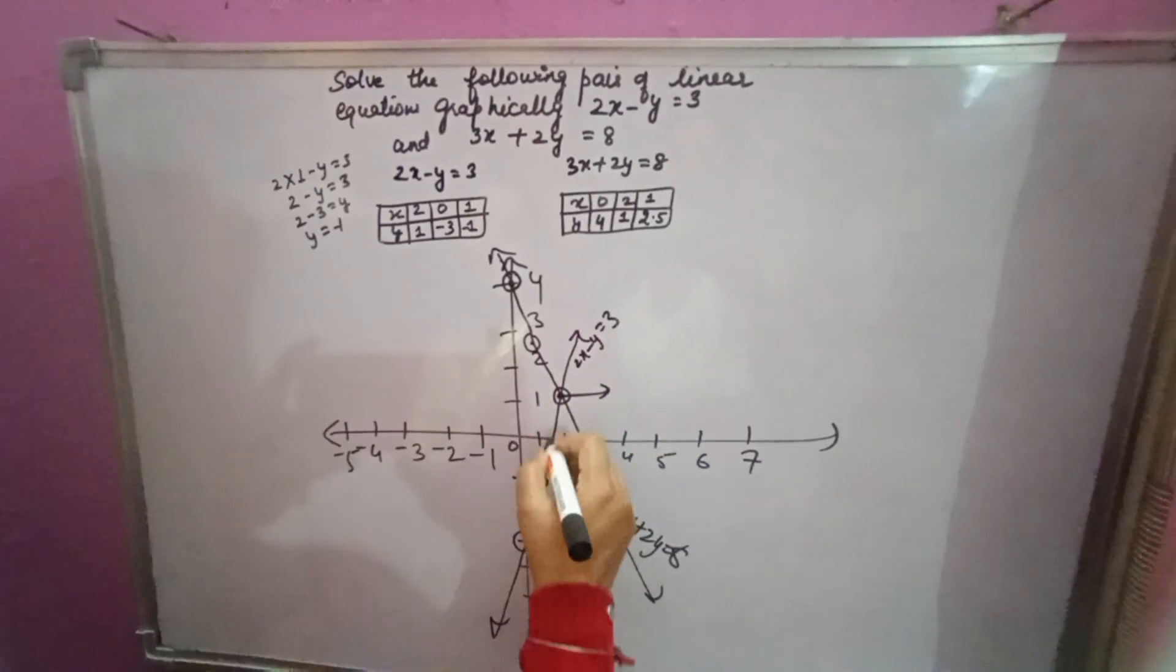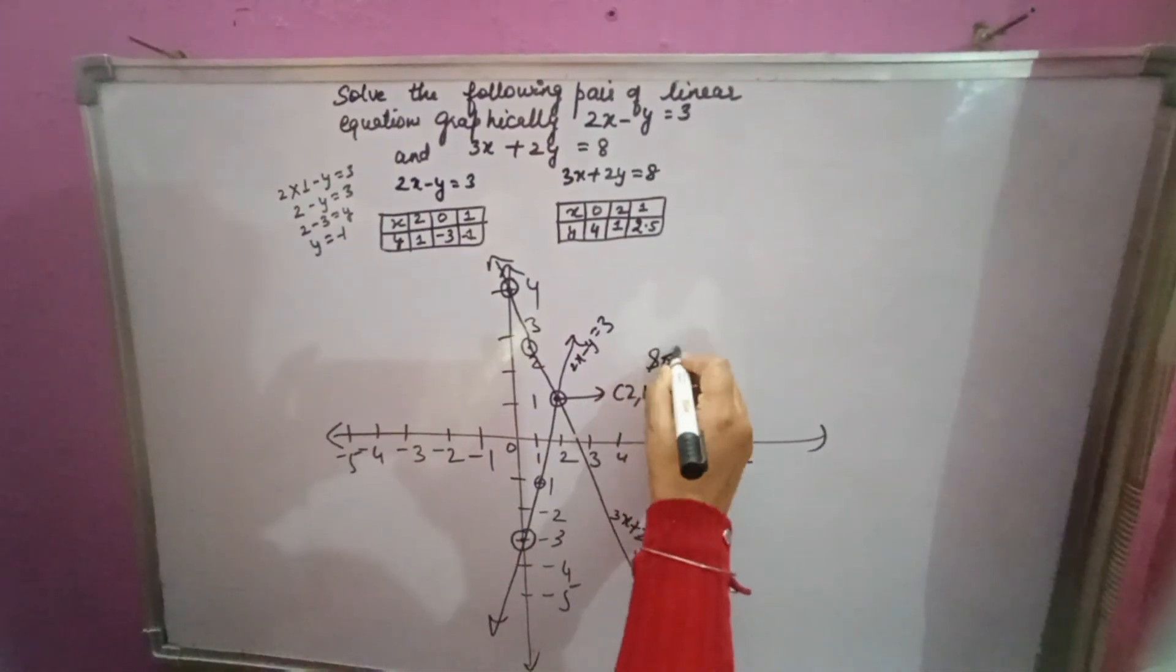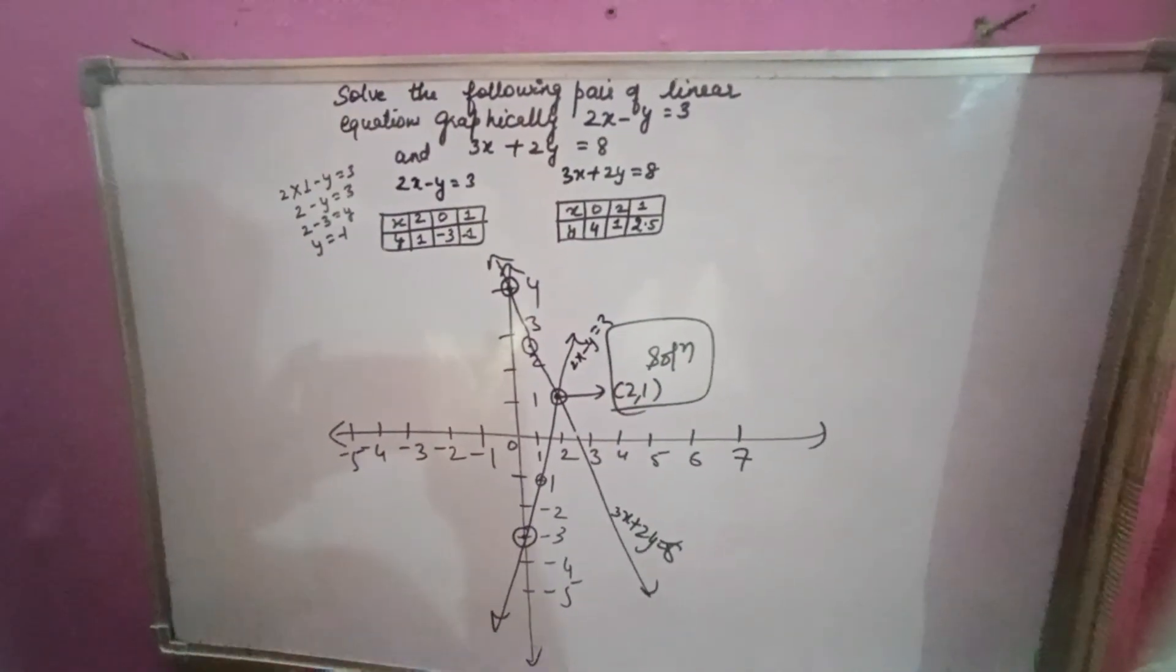Now where they are meeting. They are meeting at 2, 1. Therefore 2, 1 is my common solution. Solution of this equation is 2, 1. x equals 2 and y equals 1 is its solution.